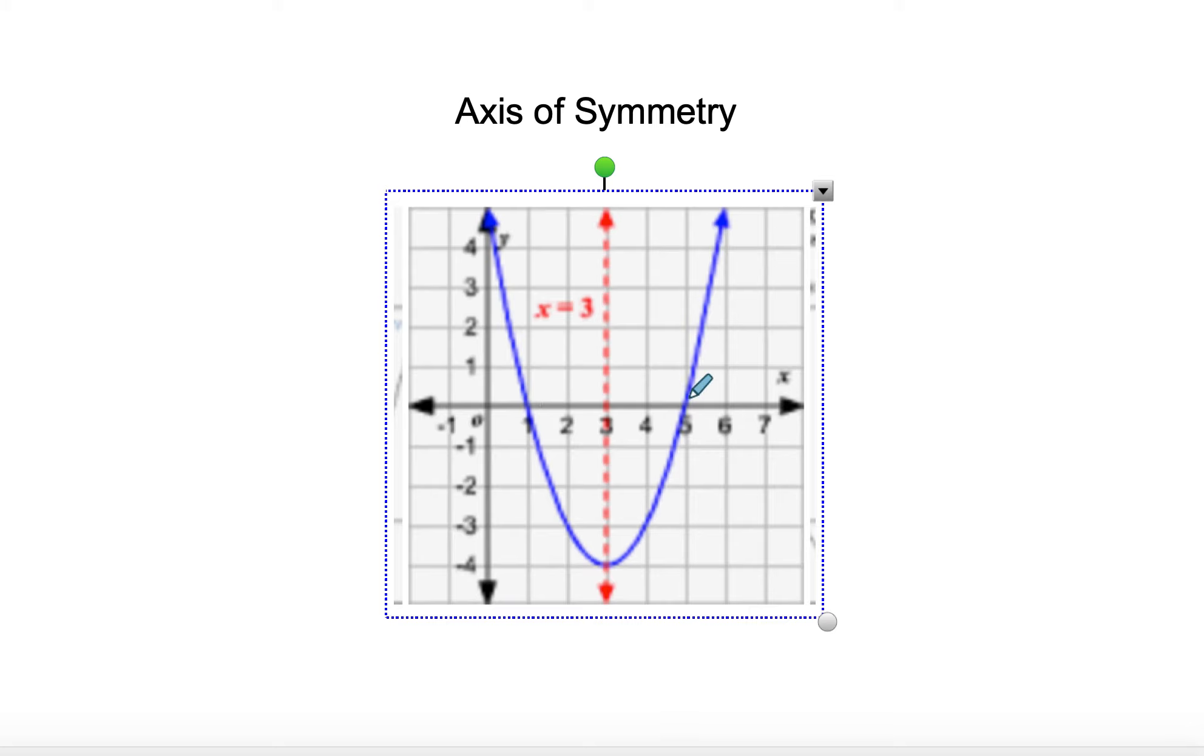Again, this one says that it's 3, and the way that we can do it is 1 plus 5 divided by 2. That gives me 6 divided by 2, so we got that x is equal to 3.